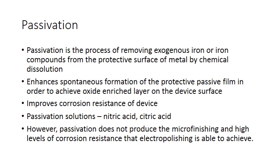Passivation is the process of removing exogenous iron or iron compounds from the protective surface of a metal by chemical dissolution. As discussed, most metals form a protective oxide layer — titanium oxide is an example — and this oxide layer protects the metal from corrosion. If there are extraneous agents containing iron or iron compounds, this depletes the oxide layer and causes corrosion.